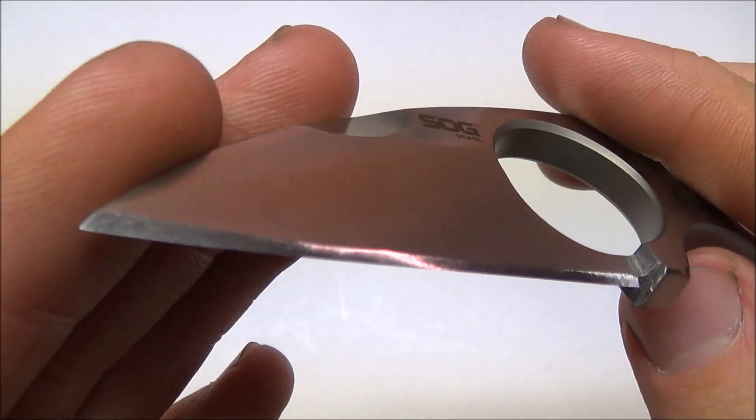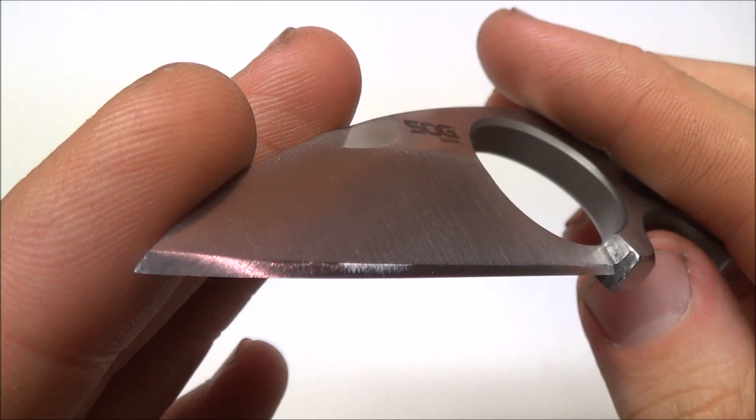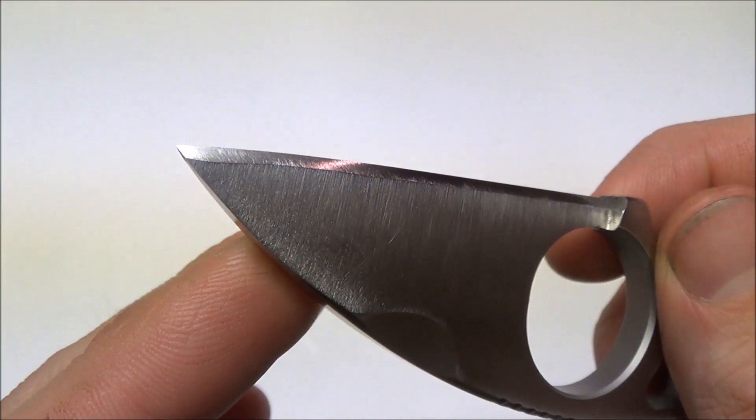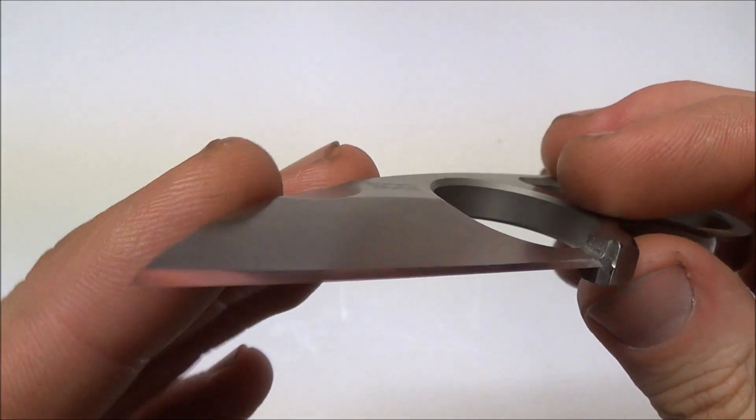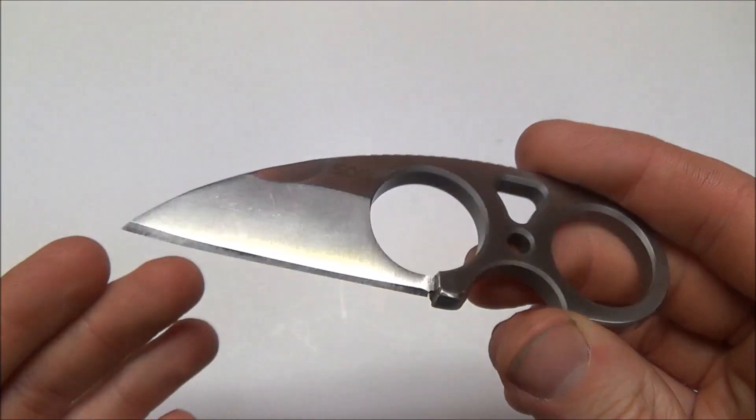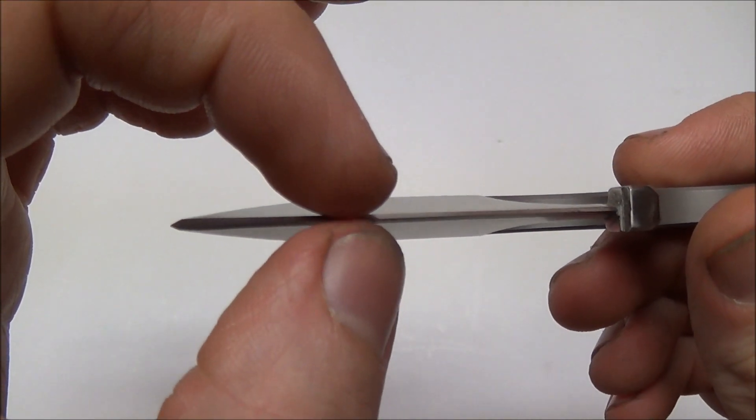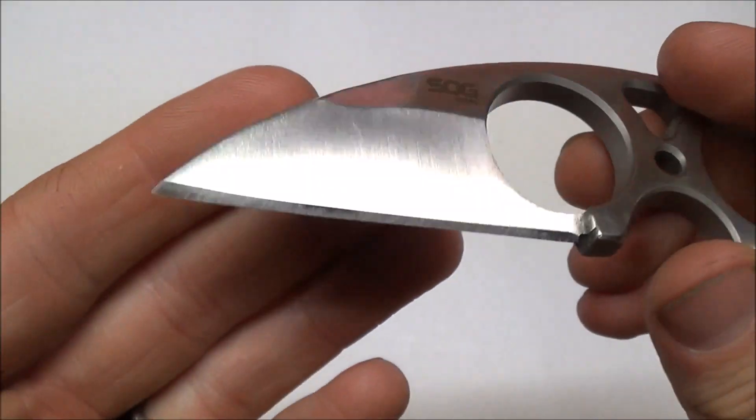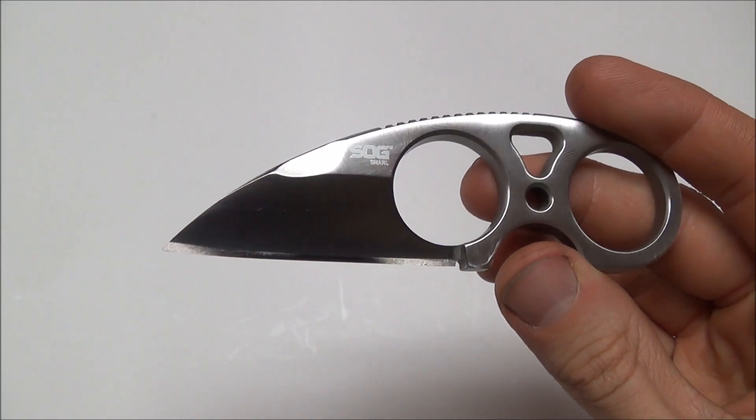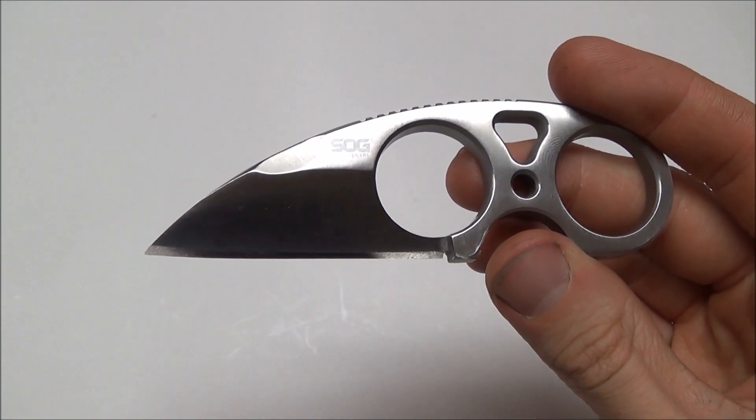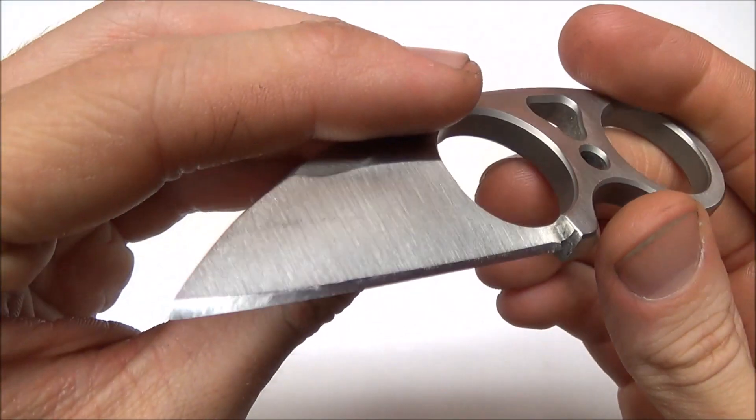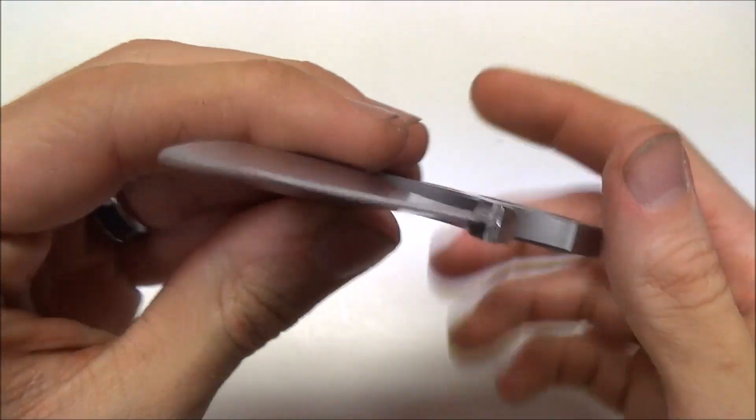Now, like I said, I did reprofile the edge. It does not come like this. But the edge right from the factory was hair shaving sharp. So there was nothing wrong with the edge per se. It was just a lot steeper. Now, like I said, it was hair shaving sharp. And a steeper edge, thicker behind that cutting bevel, is going to be better for utility tasks because it's not going to be as prone to chipping. It's going to be a lot more durable. I didn't really need it to be that durable. I'm just picky about my edge. So I thinned it out a little bit. Backed that edge up a little bit.